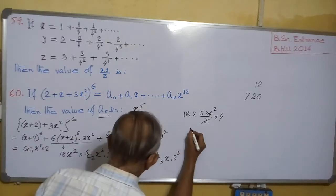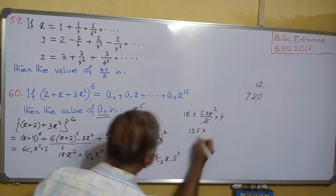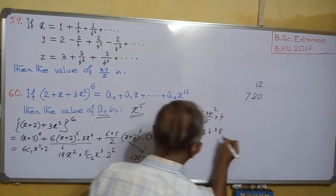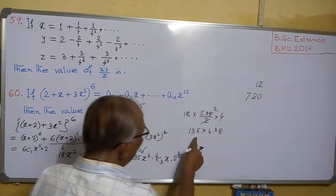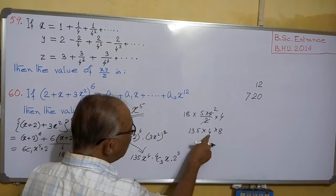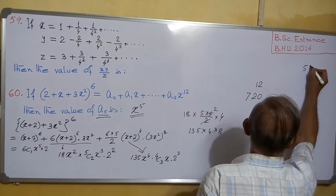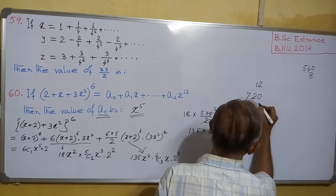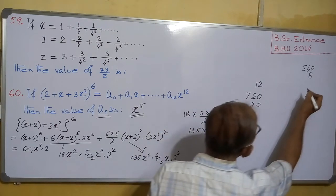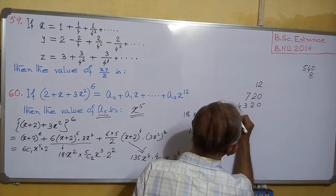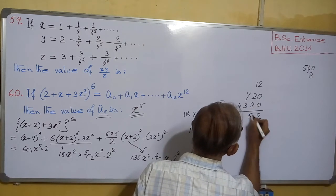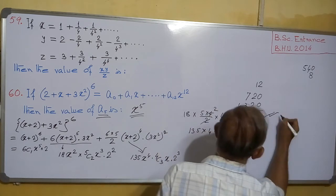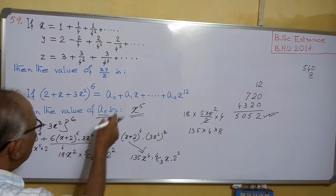So the term is 135 × 4C3 × 8, where 4C3 = 4, giving 135 × 4 × 8 = 4320. Wait — 135 × 4 = 540, then 540 × 8 = 4320. Adding the contributions: 720 + 4320 = 5040. So 5040 is the coefficient of x⁵, that is a5.